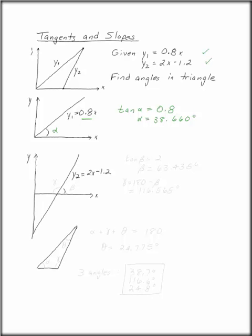Look at the second line, y2 is 2x minus 1.2. Same thing, tangent of beta is equal to 2. So beta here is equal to 63.435 degrees.